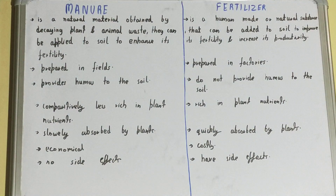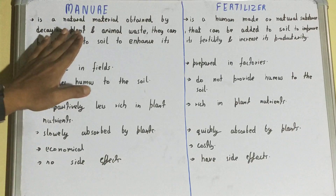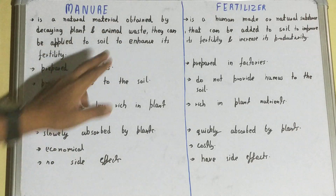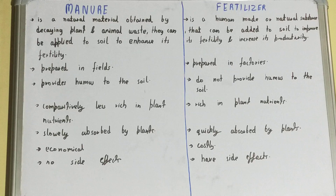Hello friends, in this video I'll be helping with the difference between manure and fertilizer. So let's start. Manure is a natural material obtained by decaying plant and animal waste. It is applied to the soil to enhance its fertility.